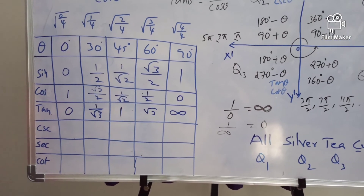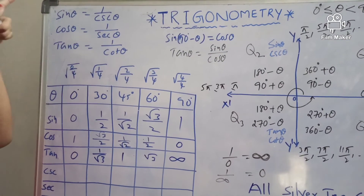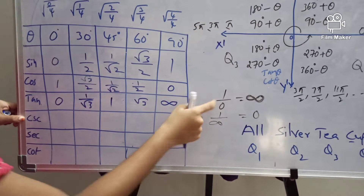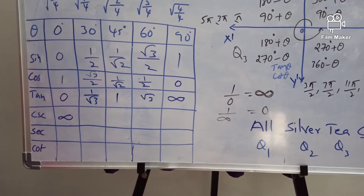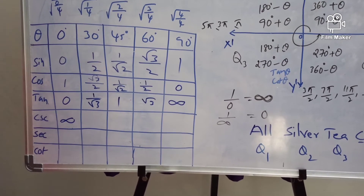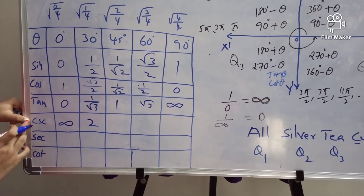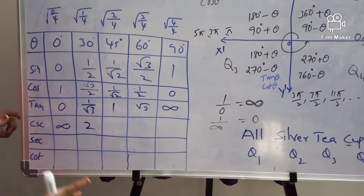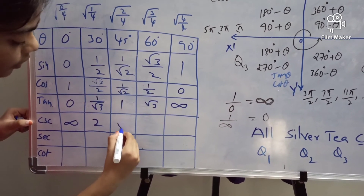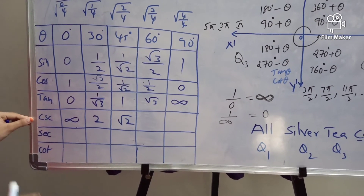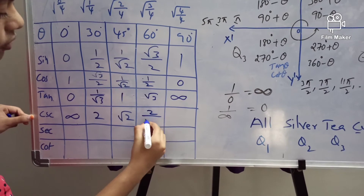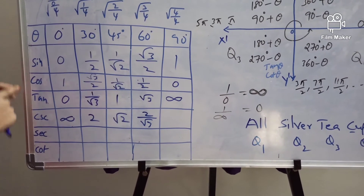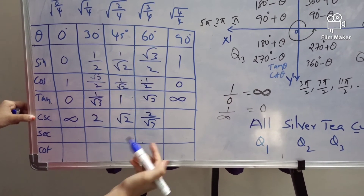Cosec θ = 1/sin θ. Cosec 0° = 1/sin 0° = 1/0 = infinity. Cosec 30° = 1/sin 30° = 1/(1/2) = 2. Cosec 45° = 1/sin 45° = 1/(1/root 2) = root 2. Cosec 60° = 1/sin 60° = 2/root 3. Cosec 90° = 1/sin 90° = 1/1 = 1.